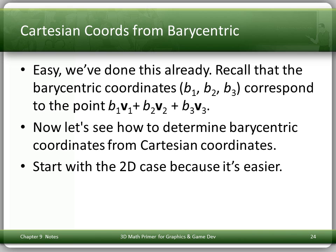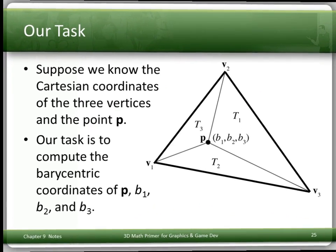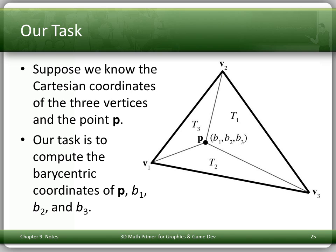To convert barycentric coordinates to Cartesian is easy — we've already seen that a point equals b1 v1 plus b2 v2 plus b3 v3. Now let's see how to go backwards: determining barycentric coordinates from Cartesian coordinates. We start with 2D. We know the Cartesian coordinates of the three vertices v1, v2, v3, and the point P. We want to compute the barycentric coordinates b1, b2, b3.